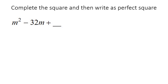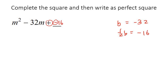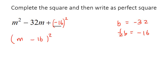Here's the next one. So here the b value is negative 32. Half of b would be negative 16, so you're going to put negative 16 here. But now things look a little bit weird, so what you're going to do is put the negative 16 in a bracket. Then you open up your bigger bracket and you're going to say m, negative 16, to the power of 2.